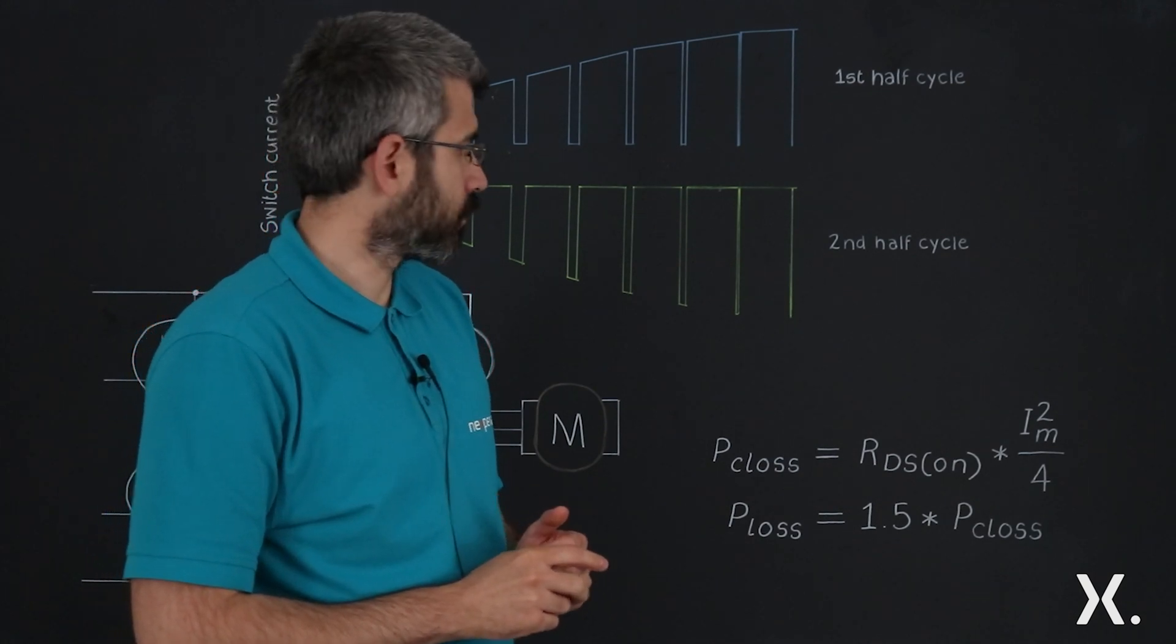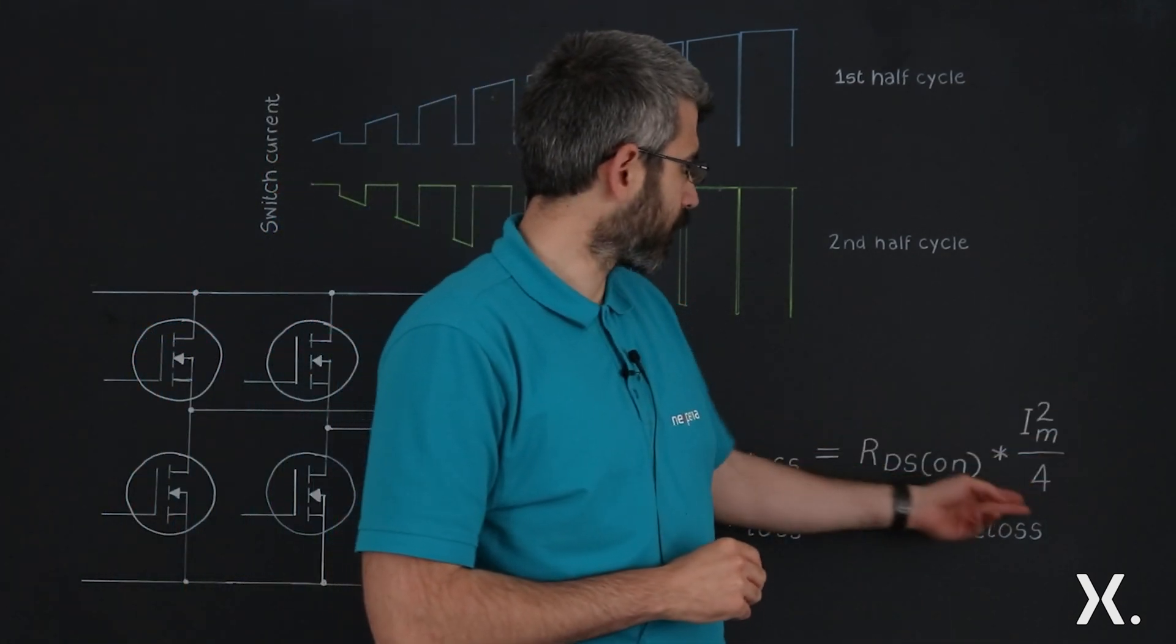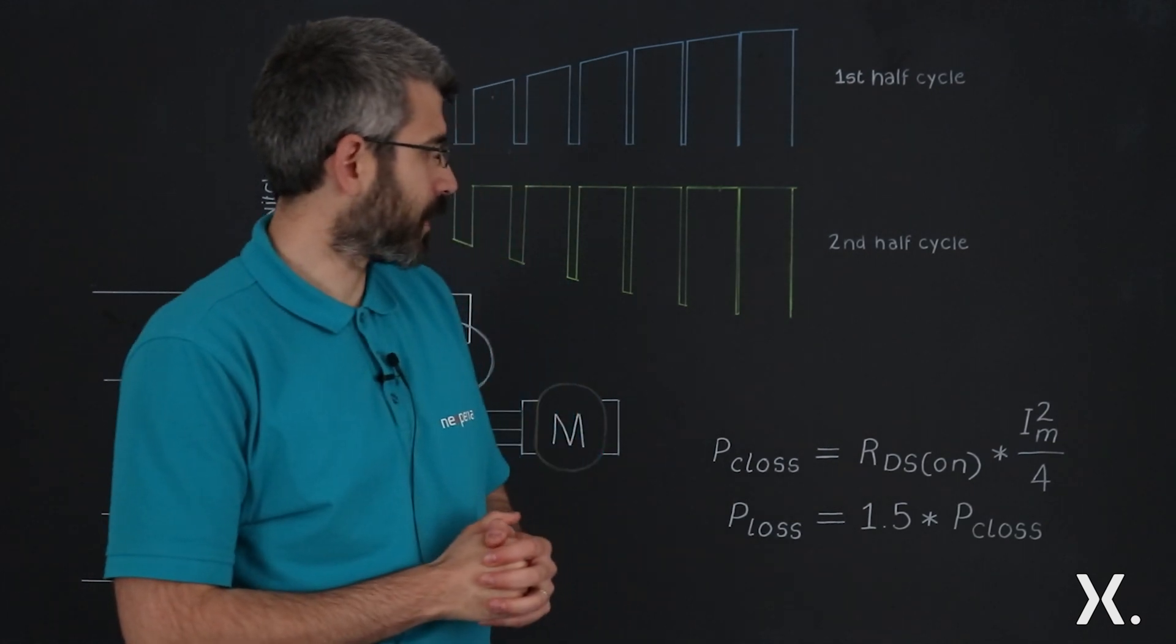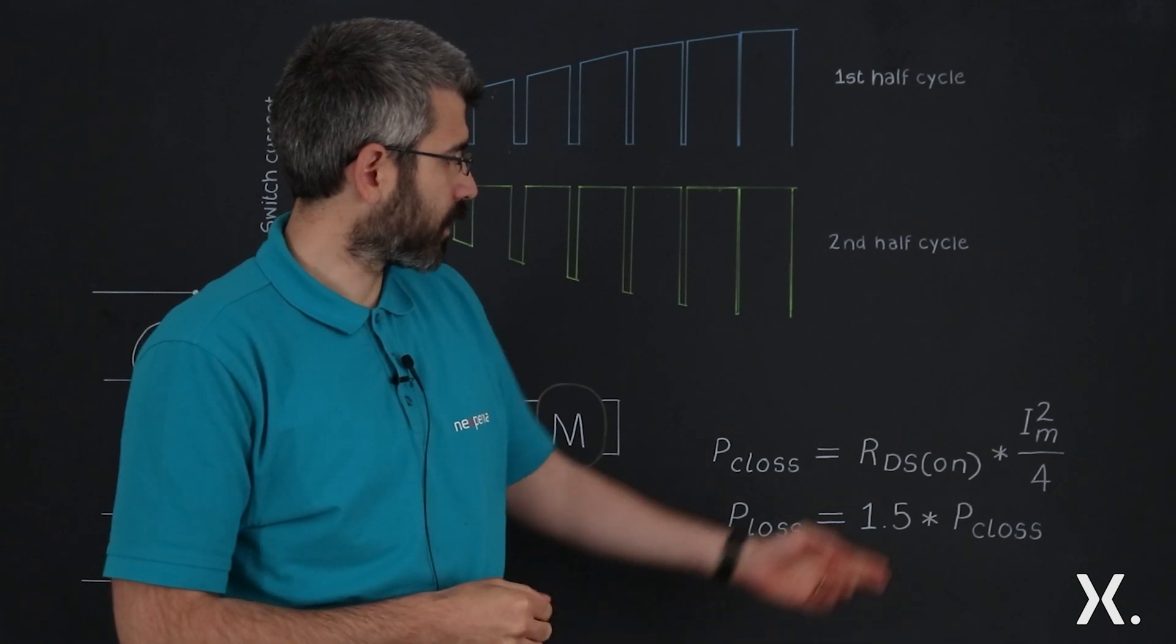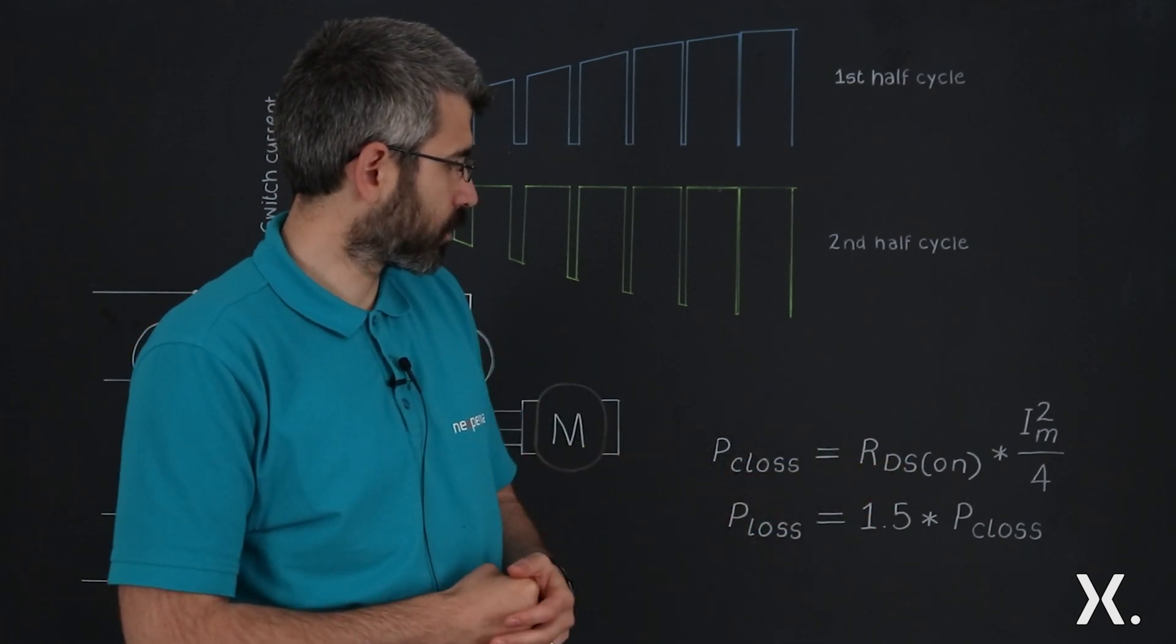We integrate that to get the square of the RMS value. We end up with this term, which is the maximum value of the current squared divided by 4. Multiplied by the RDS-ON gives us the conduction losses.